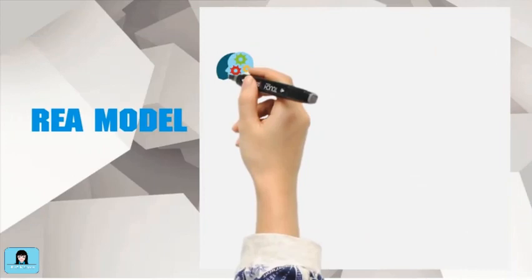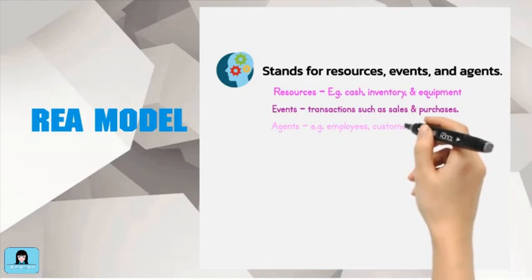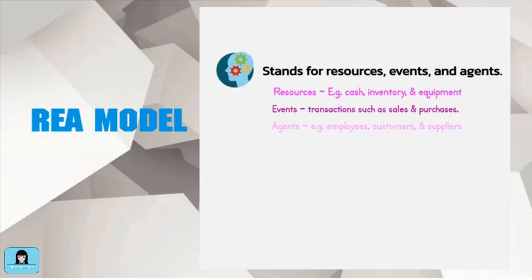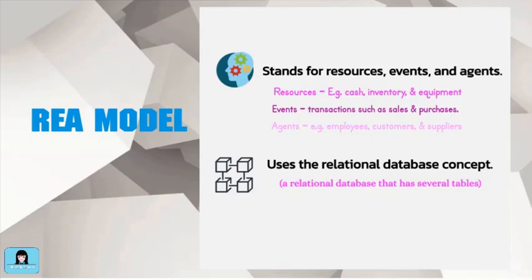The REA model stands for Resources, Events, and Agents. Examples of resources are cash, inventory, and equipment. Events refer to transactions. Agents mean people such as employees, customers, and suppliers. The REA model is an accounting framework used for modeling an organization's critical resources, events, and agents, and the relationships between them. Once the three are specified, both accounting and non-accounting data about these transactions or phenomena can be identified, captured, and stored in a relational database.